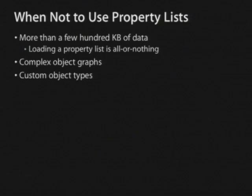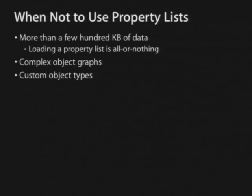Cases where you shouldn't use property lists: first, when you're storing more than a few hundred K of data, because loading a property list is all or nothing — you can't bring in part of the file. If you've got an array with 10,000 strings and you want item 57, you have to bring the whole thing into memory, which is problematic on the iPhone. Also avoid property lists for complex object graphs with lots of relationships between objects, and for custom object types beyond strings, numbers, dates, arrays, and dictionaries.